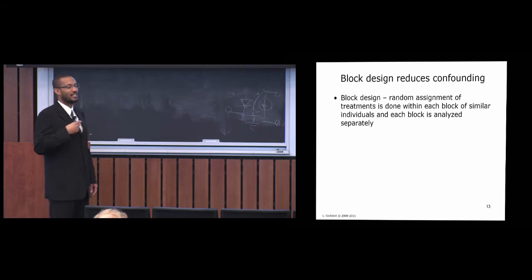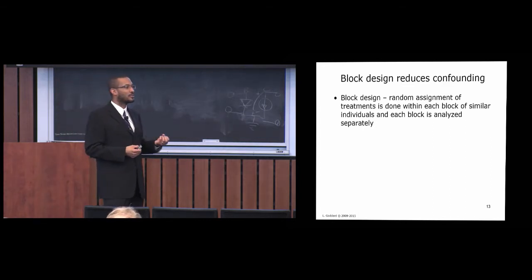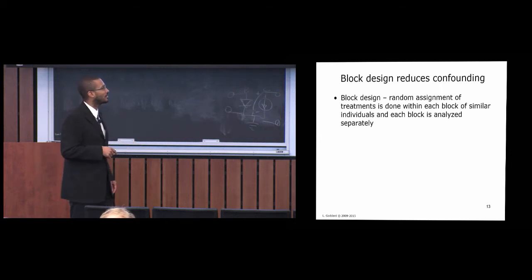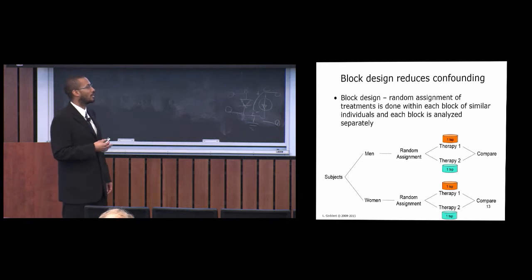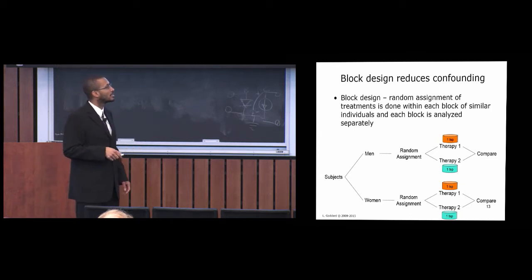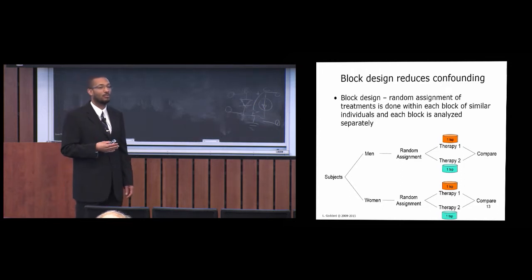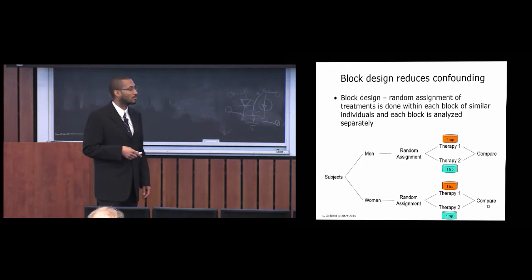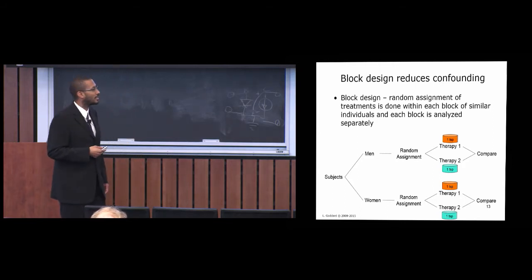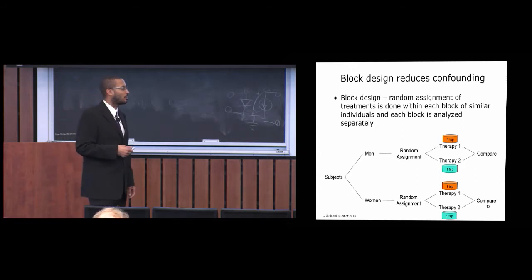How do we separate the explanatory variables from the noise factors — the confounding variables? There's a block design: you randomly assign treatments within each block of similar individuals and analyze each block separately. For example, if gender could be a confounding variable, first separate the group into men and women, then randomly assign some men the hair growth formula and others plain shampoo, and separately do the same for women, comparing whether the formula produces a noticeable improvement in each block.